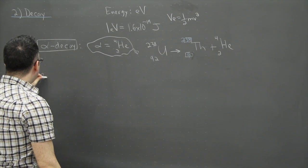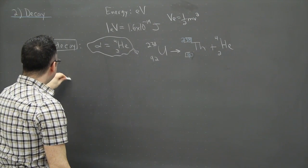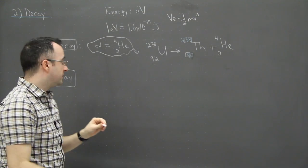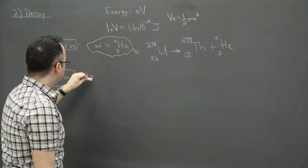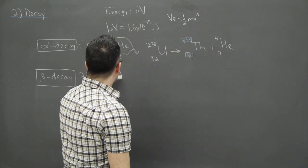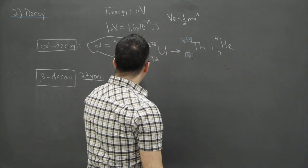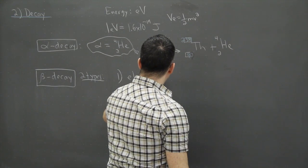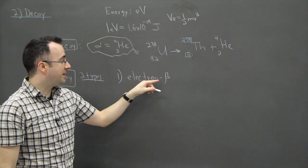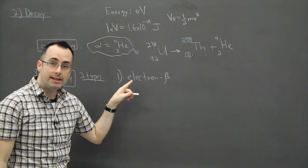Now we can also have beta decay and there's two types of beta decay. So the first type is called electron beta decay. And that tells you something right there. It's because this beta particle is actually an electron.